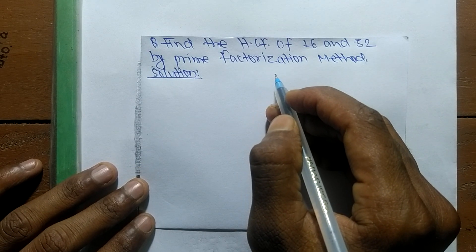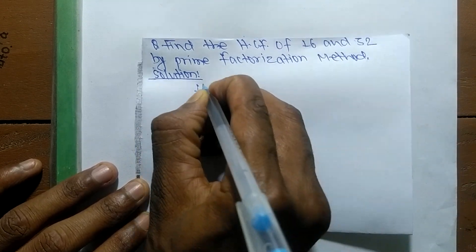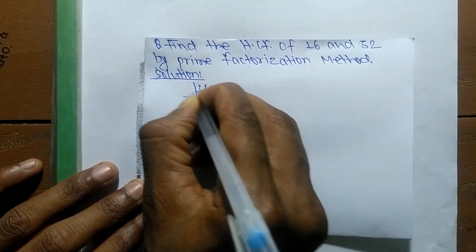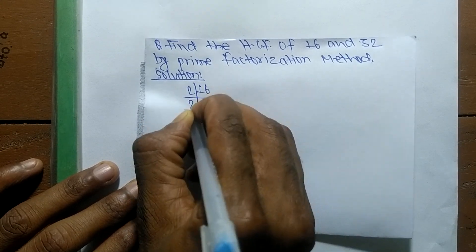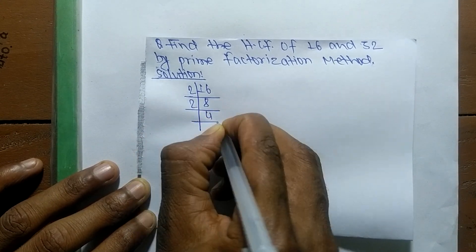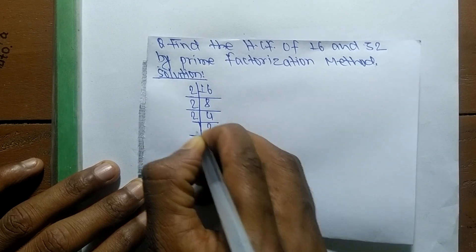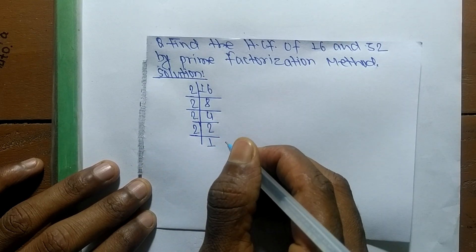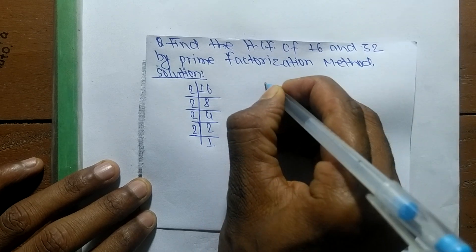First we find out the prime factors of 16. It is 2 times 8 equals 16, 2 times 4 equals 8, 2 times 2 equals 4, and 2 times 1 equals 2. These are the prime factors of 16.